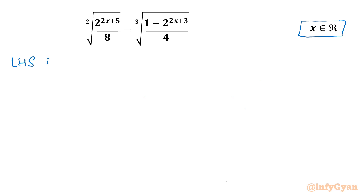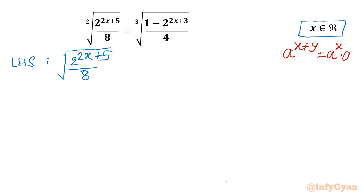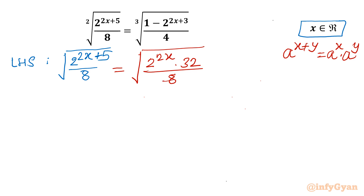For the LHS, I will write square root 2 raised to the power (2x + 5)/8. Using the exponent property a^(x+y) = a^x · a^y, I can write this as square root 2 raised to the power 2x, times 2^5 which is 32, over 8. We can cancel 8 and 32 to get 4, so it becomes square root 2^(2x) times 4.